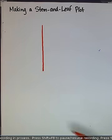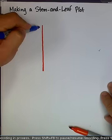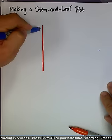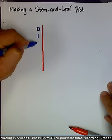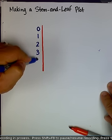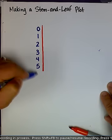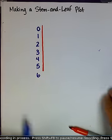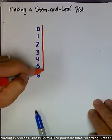So there we have our stem, and our tens digits are going to be represented here: 0, 1, 2, 3, 4, 5, and 6. It looks like I have to extend my stem a little bit.